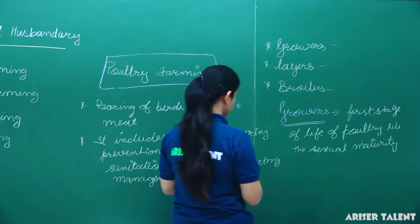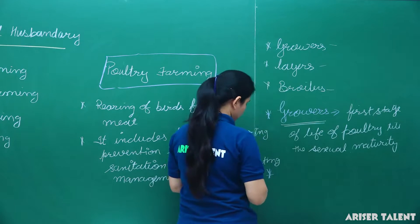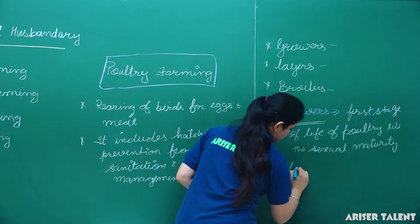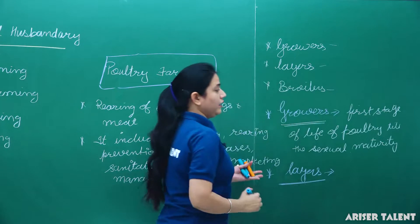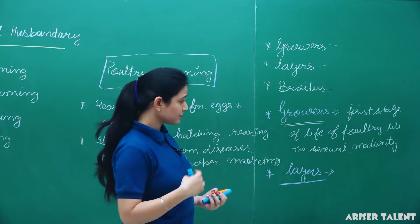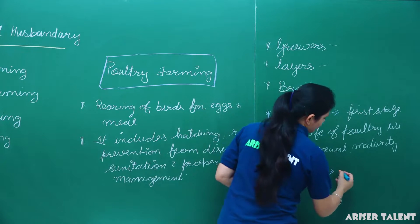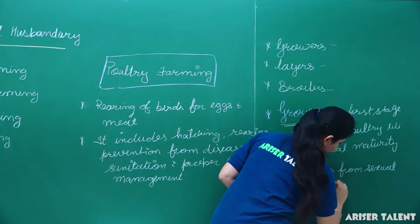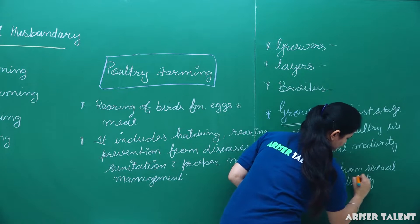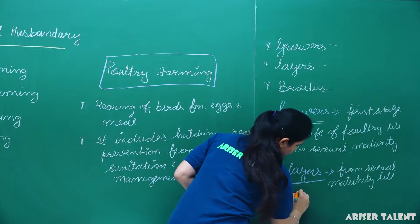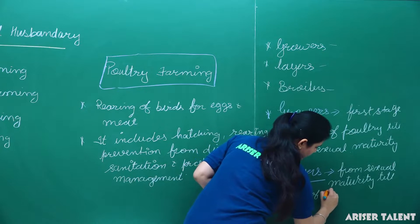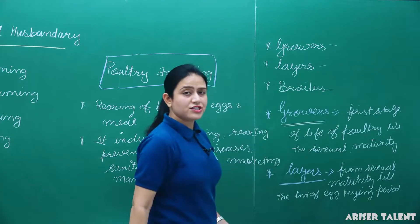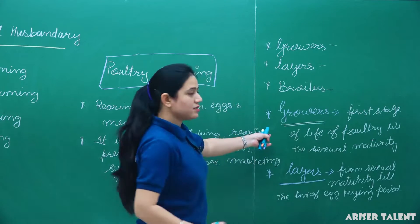The second stage is layers. Layers is the stage of chickens from sexual maturity till the end of the egg-laying period. Birds in this stage are known as layers, and birds in the first stage are known as growers.